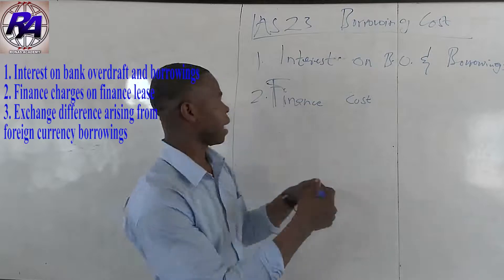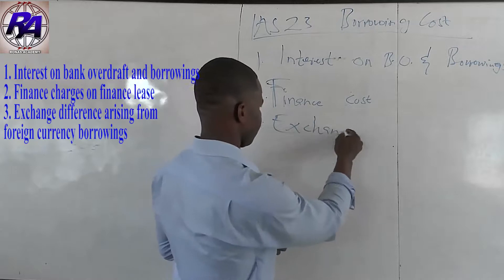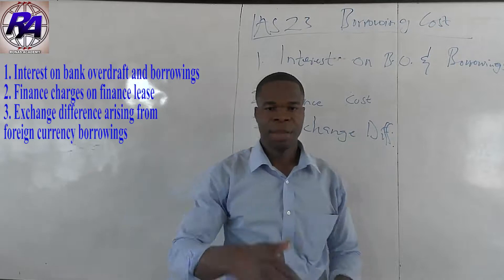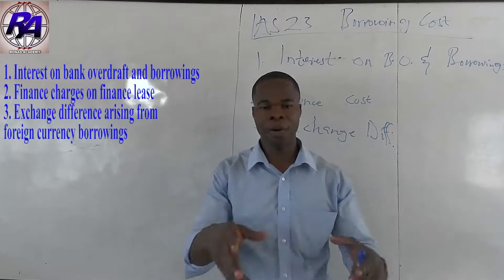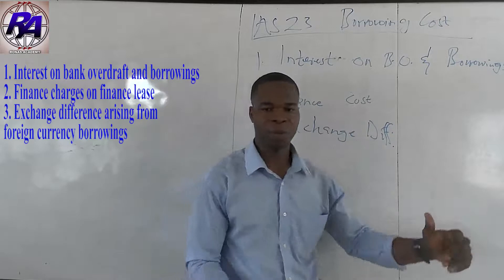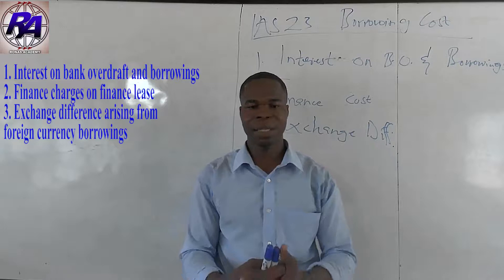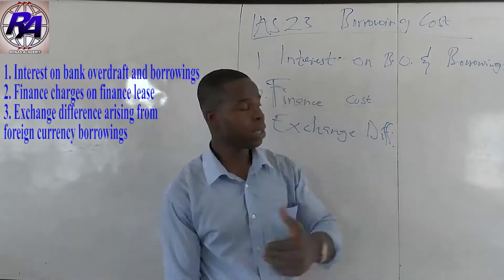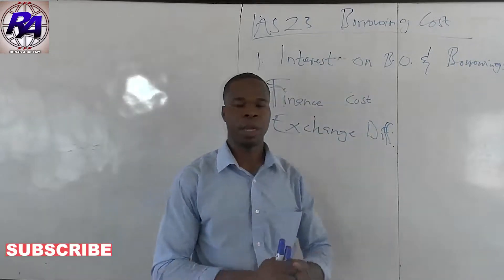The third example is exchange differences that arise as a result of foreign currency borrowings, to the extent that they are regarded as an adjustment on the interest cost. So these are the three examples of borrowing costs.